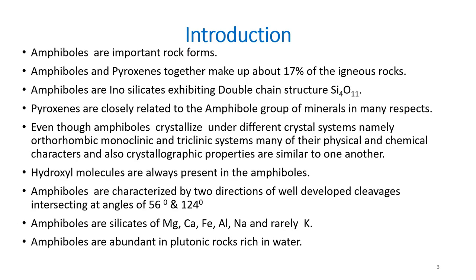Coming to the introduction. Amphiboles are important rock-forming minerals, and together with pyroxenes they make up about 17% of igneous rocks. Amphiboles are inosilicates exhibiting a double chain structure, with the resulting formula Si4O11. They are very closely related to the pyroxene group of minerals in many respects, and they crystallize under different crystal systems like orthorhombic, monoclinic, and triclinic, though many of their physical, chemical, and crystallographic properties are similar to one another.